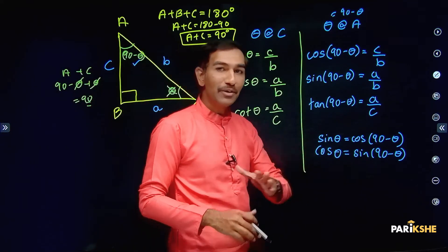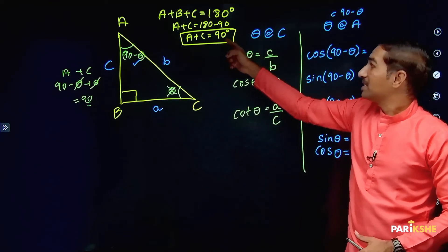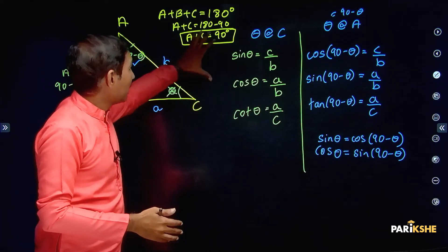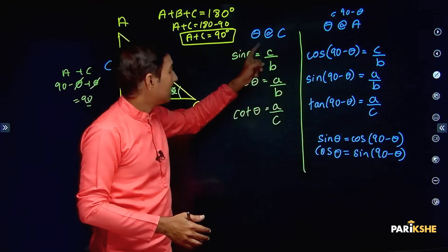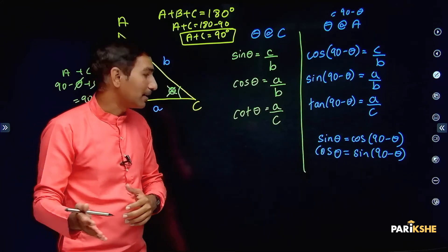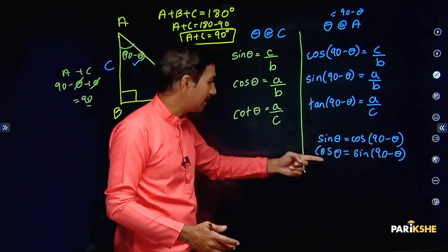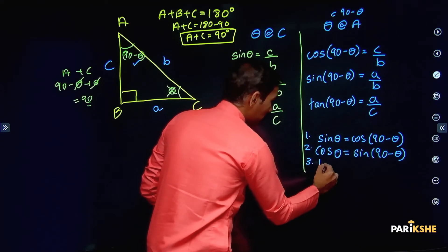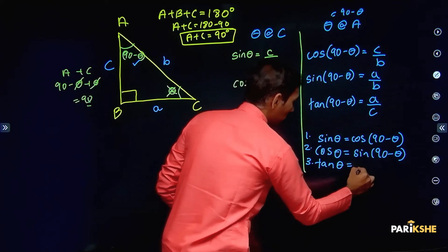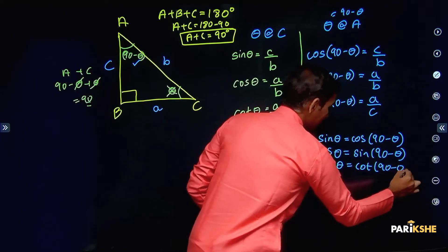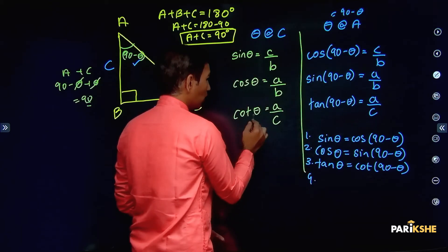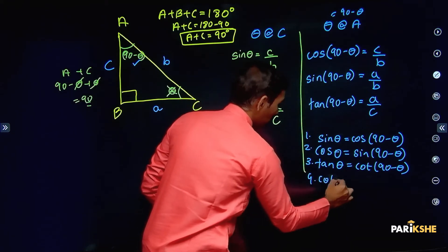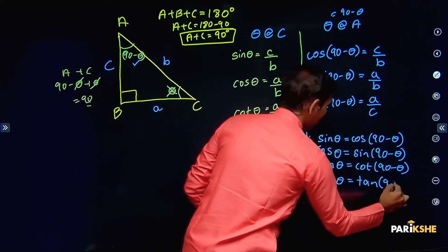This is what complementary angles means. Since A plus C add up to 90 degrees, and looking at the trigonometric ratios, we can conclude: sin theta equals cos(90 minus theta), cos theta equals sin(90 minus theta) — that is the first and second result. Third: tan theta will be equal to cot(90 minus theta). Fourth: cot theta is equal to tan(90 minus theta) — since cot theta gives A by C and tan(90 minus theta) also gives A by C.